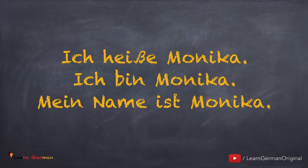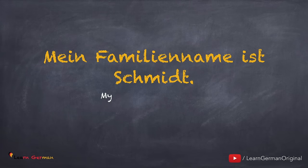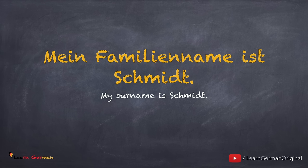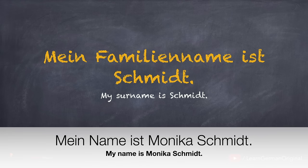All these three mean the same. Now let's come to the last name. Mein Familienname ist Schmidt. Whenever you come across long words in German, always split them. Familienname. You can also simply say Mein Name ist Monika Schmidt. Noch einmal. Mein Name ist Monika Schmidt.